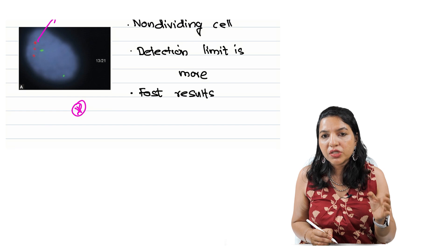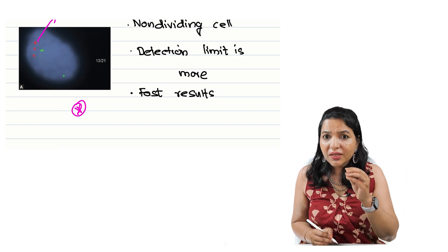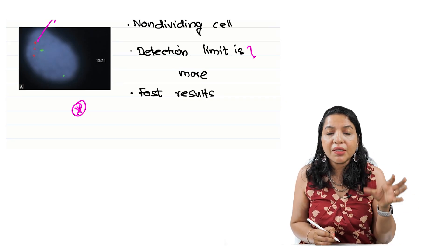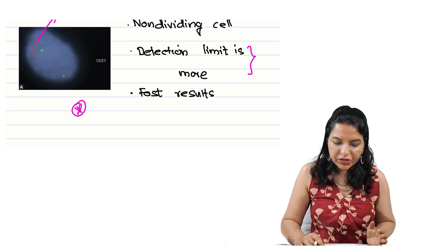So our advantage of FISH is we can use non-dividing cells. We don't have to culture the cells, and the detection limit is more in the case of interphase FISH, and we can get the result very fast. So fast results. These are the advantages of FISH.